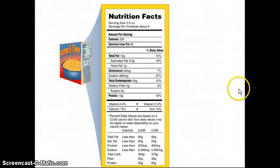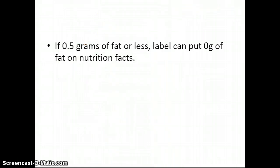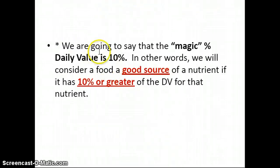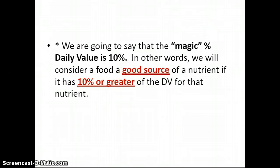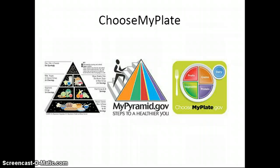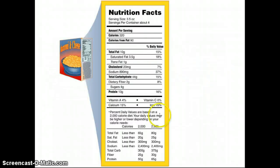The magic percent daily value is 10%. In other words, if a nutrient has a 10% or greater daily value, that nutrient is going to be considered a good source. So for example, if you're looking for good sources of fiber or vitamin A, you would want to look for a daily value that is 10% or greater.